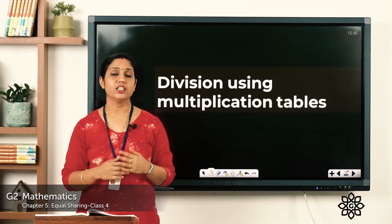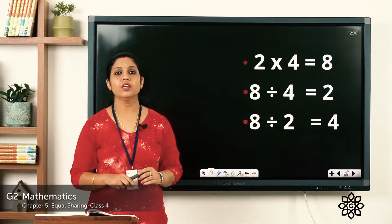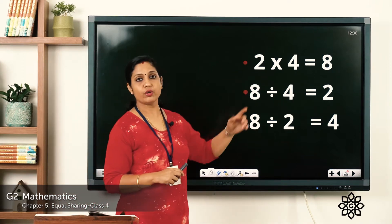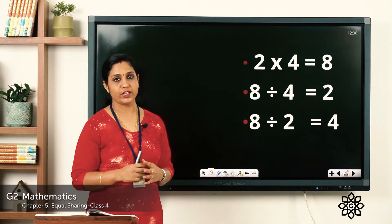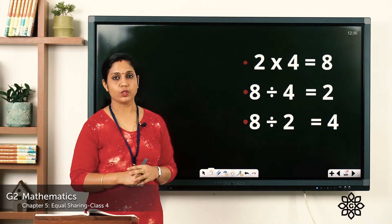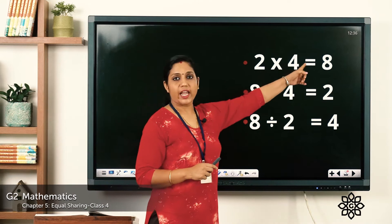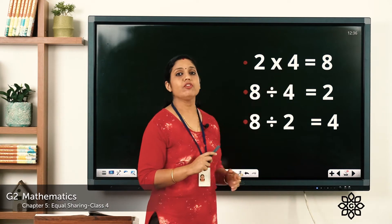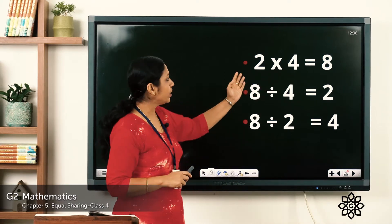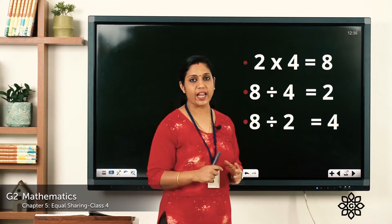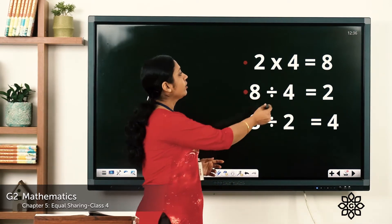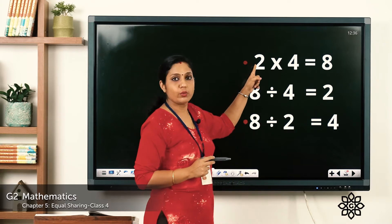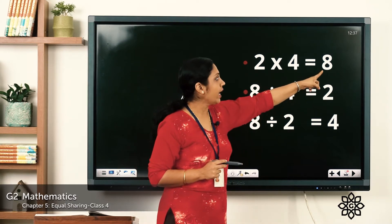Division is the opposite of multiplication. Here we can see 2 into 4 is equal to 8 — we know 2 fours are 8. We can also write this in division form. The answer is 8, so when we divide 8 by any of these numbers we get the other number. For example, 8 divided by 4 is equal to 2.